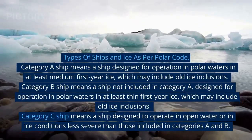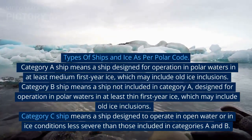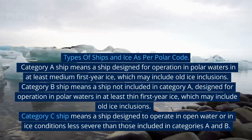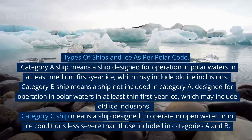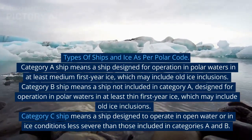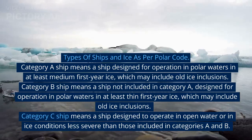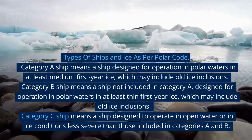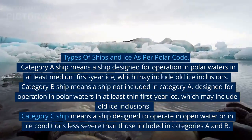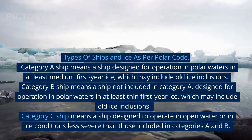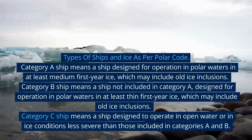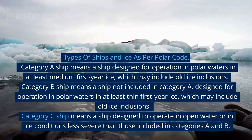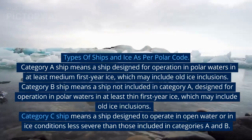Types of ships as per the Polar Code: Category A ship means a ship designed for operation in polar waters in at least medium first-year ice, which may include old ice inclusions. Category B ship means a ship not included in Category A, designed for operation in polar waters in at least thin first-year ice, which may include old ice inclusions. Category C ship means a ship designed to operate in open water or in ice conditions less severe than those included in Categories A and B.